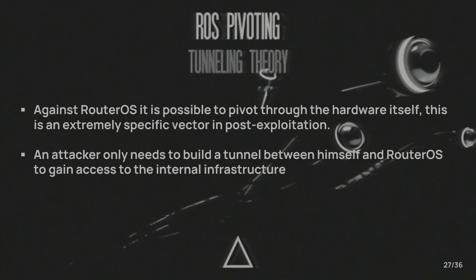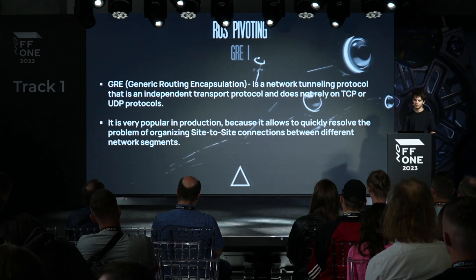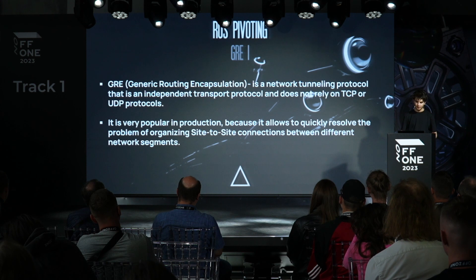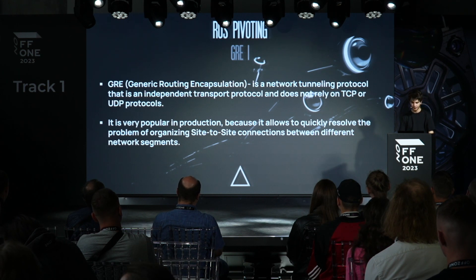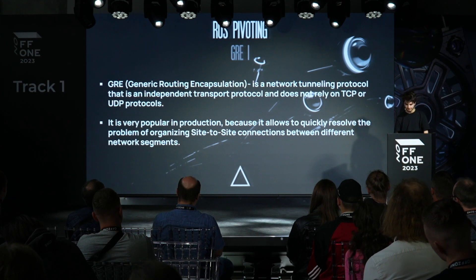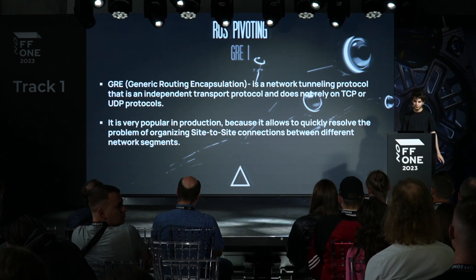With a compromised RouterOS, the internal infrastructure can be used for pivoting. The attacker builds a tunnel between themselves and the compromised router to get access to internal infrastructure. The first protocol is GRE — Generic Routing Encapsulation — a network tunneling protocol that acts as a transport layer, doesn't use ports, and doesn't rely on TCP or UDP protocols. It's an old protocol predating the TCP/IP stack, allowing you to quickly set up site-to-site connections between different network segments.